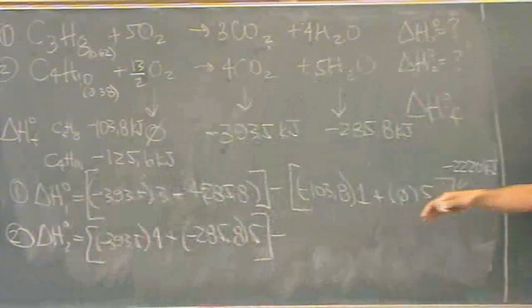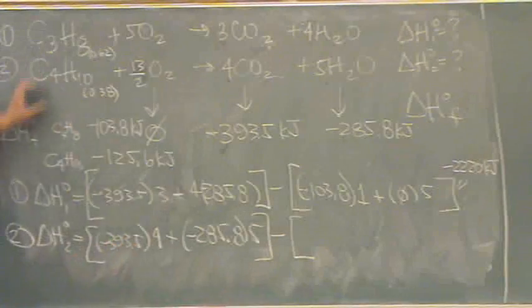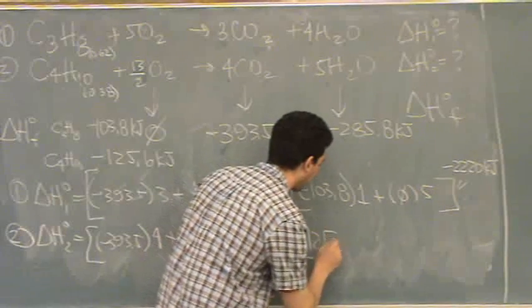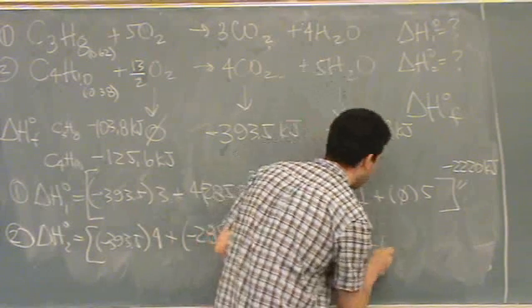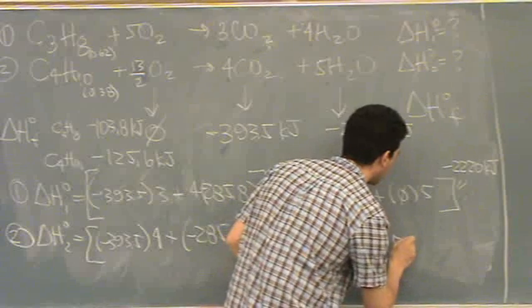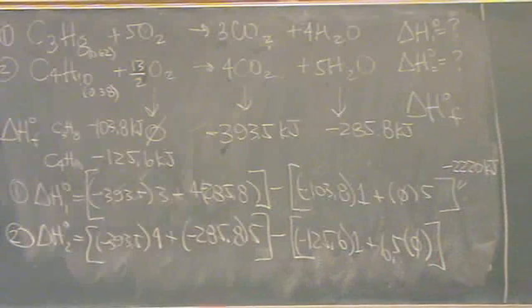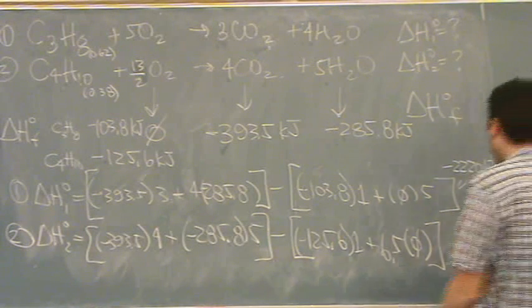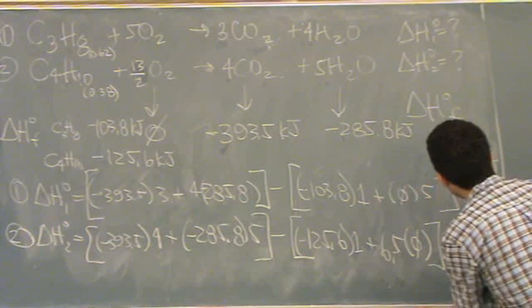So, there's products. I subtract from reactants. The reactants first. The C4H10. That's minus 125.6. And there's one of them. Plus, oxygen. There's 6.5. And it, at zero. Close brackets. When your book did that, let's see what they got. Minus 2,877. Minus 2,877 kilojoules.